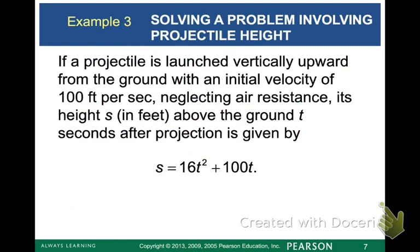If a projectile is launched vertically upward from the ground with an initial velocity of 100 feet per second, neglecting air resistance, its height s in feet above ground t seconds after projection is given by this equation. I think it's important for you to know right here that s is your height above ground and t is your seconds after launch.